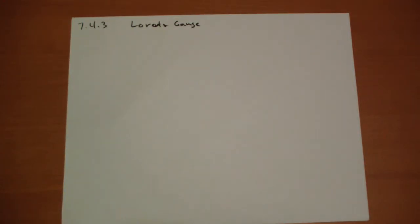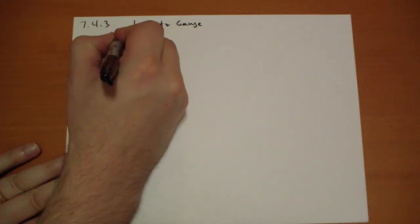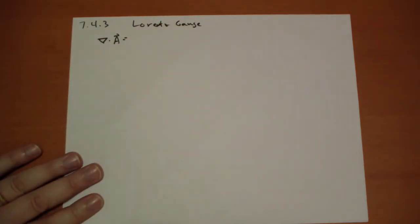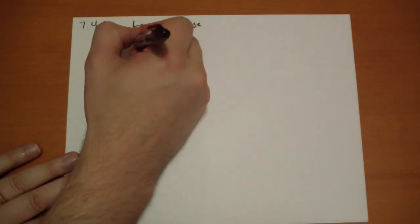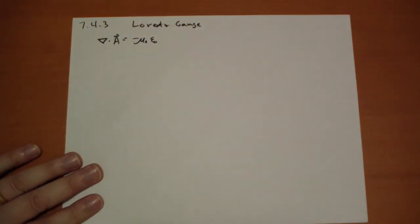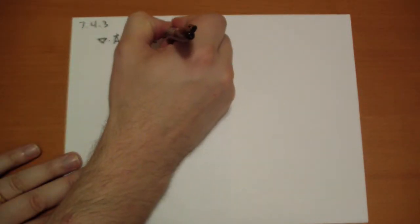So the Lorentz gauge, we choose the divergence of A to be equal to mu naught epsilon naught, the time derivative of V.